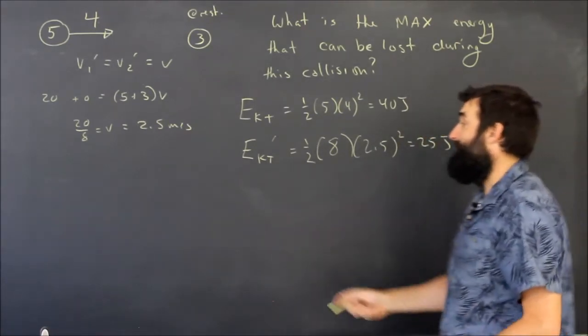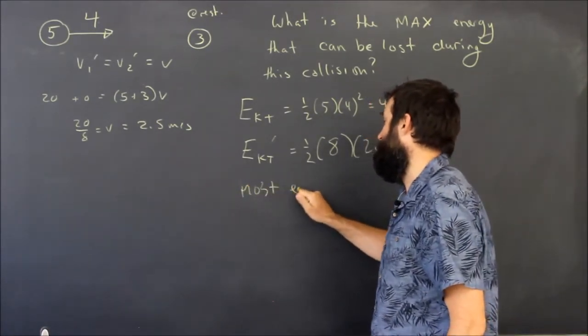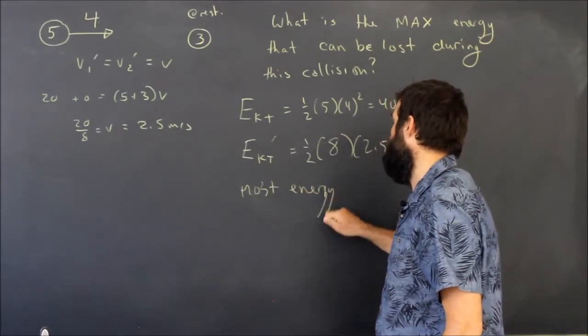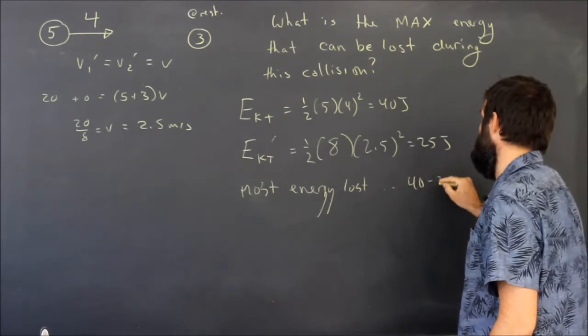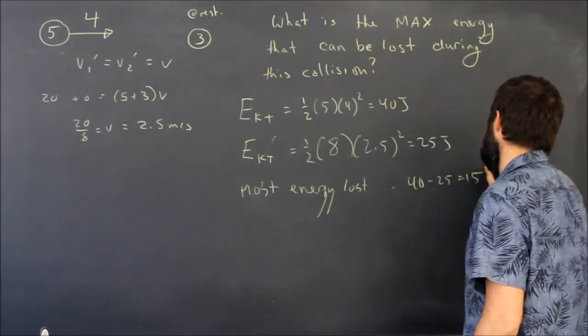So, at most, the most energy lost, the most energy that can be lost is obviously 40 minus 25 is 15 joules.